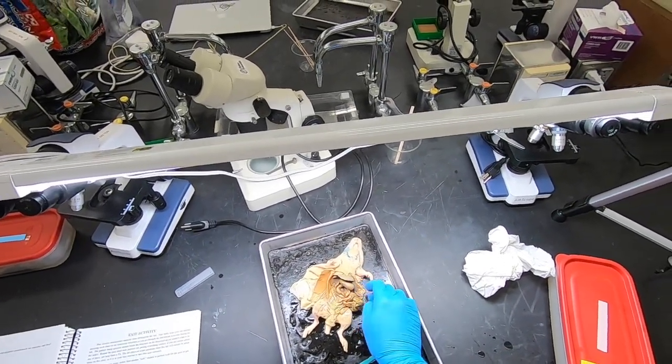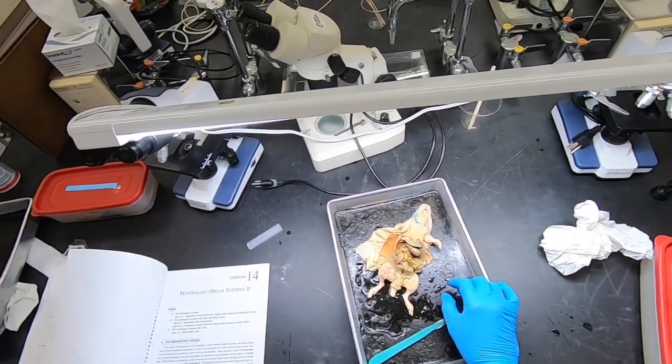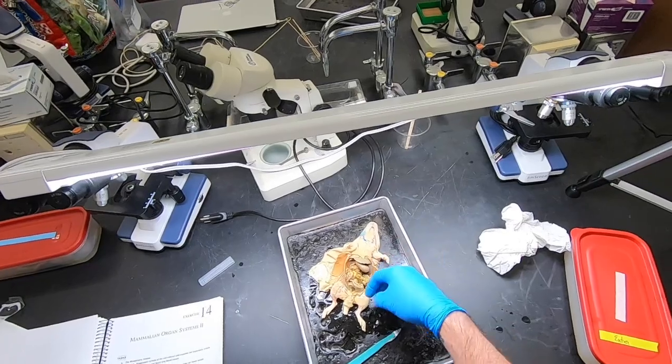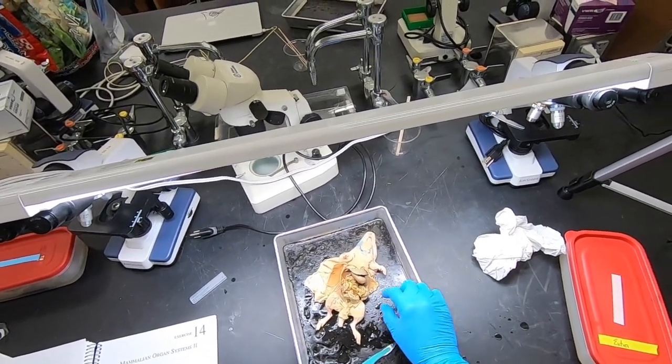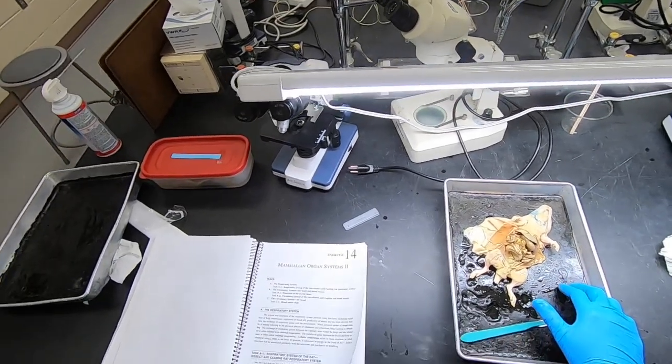The duodenum is part of the small intestine. The small intestine feeds to the cecum and then to the large intestine, and once the food is done in the large intestine, it's going to leave through the anus.